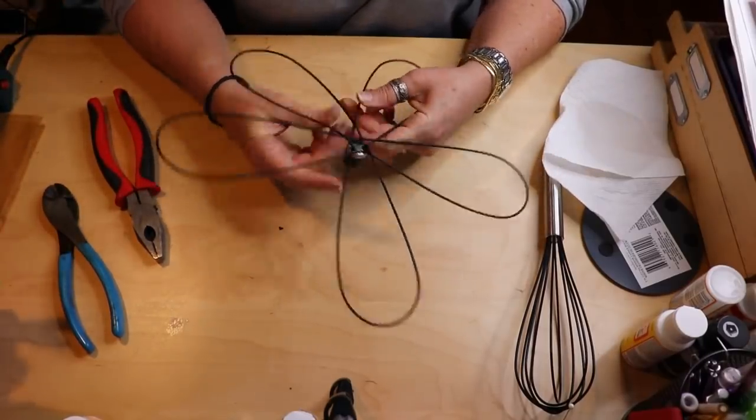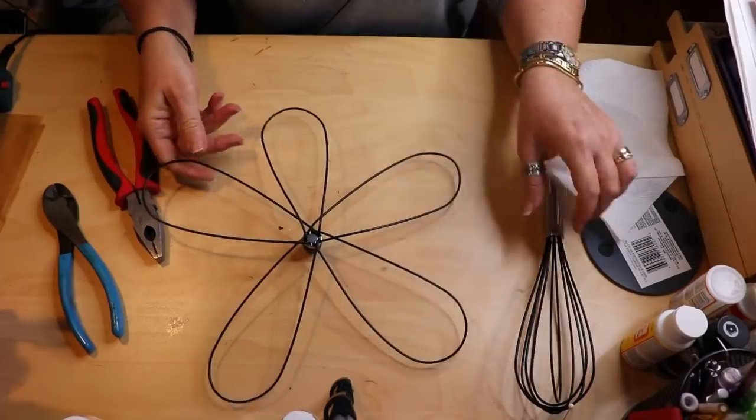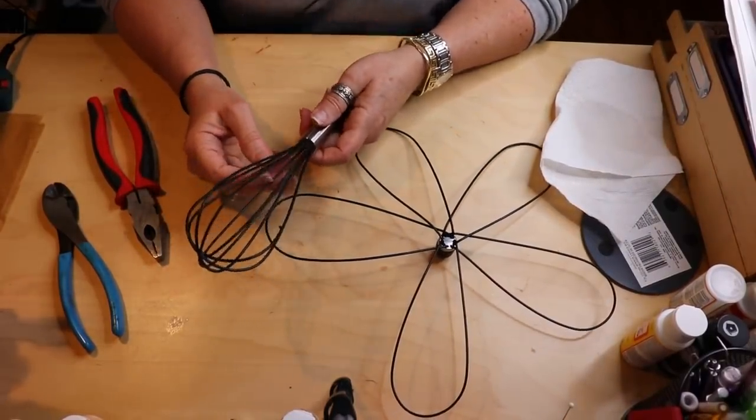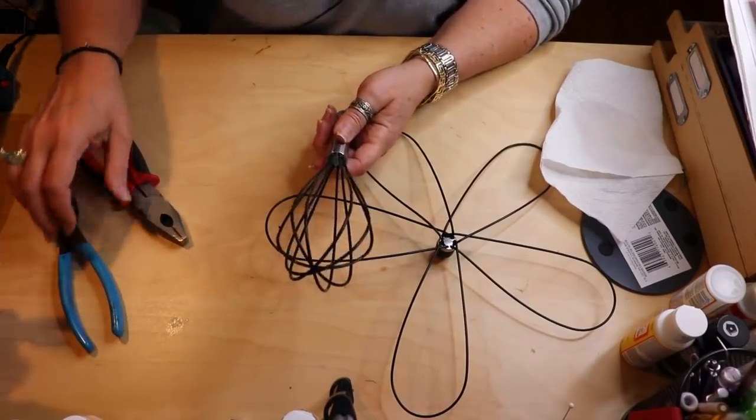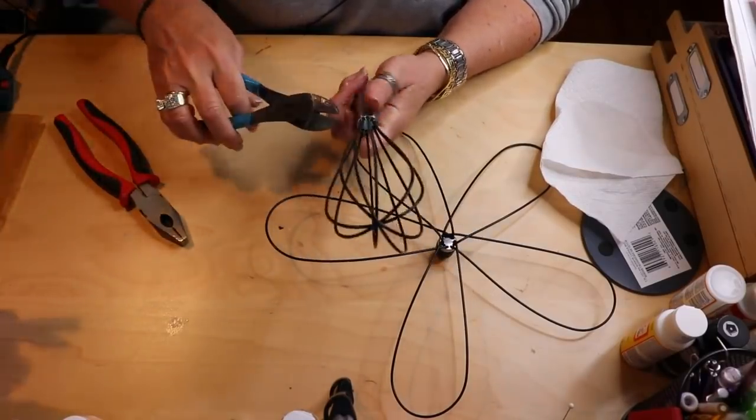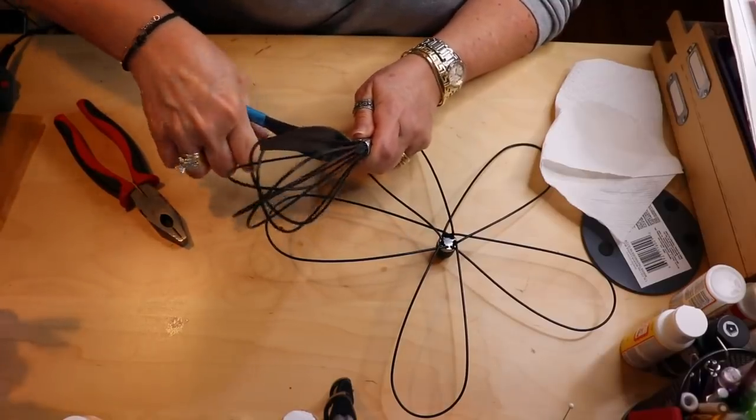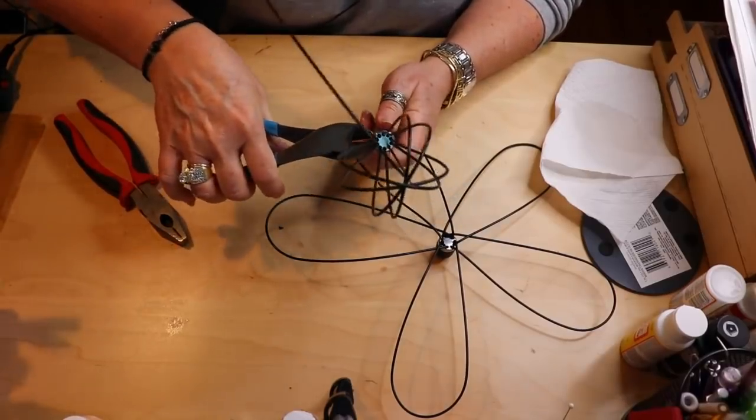And then the next thing we're going to be doing is taking our other whisk, we're probably going to need three whisks in total. And this one you don't have to take apart, but what we're going to be doing is cutting off the wire part. So just go around and cut each one of those. That's why you're going to need your wire cutters, guys.